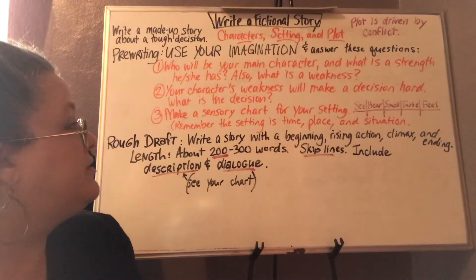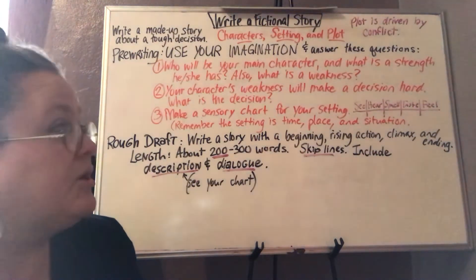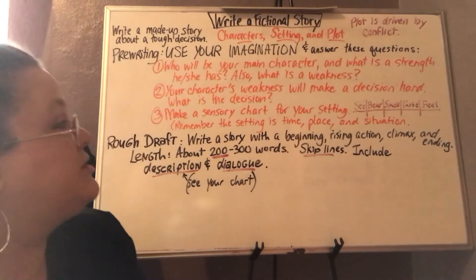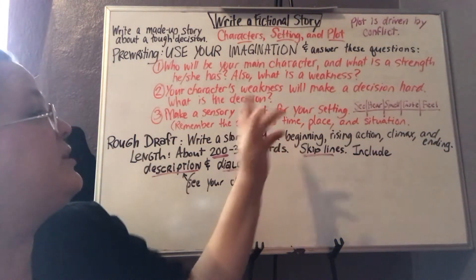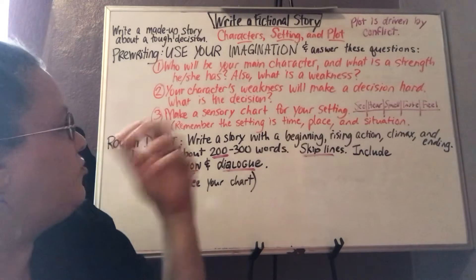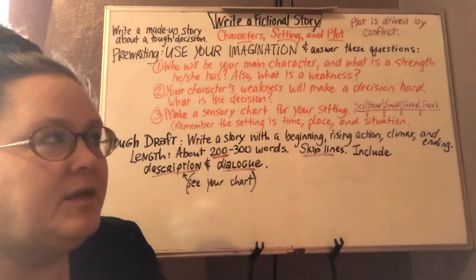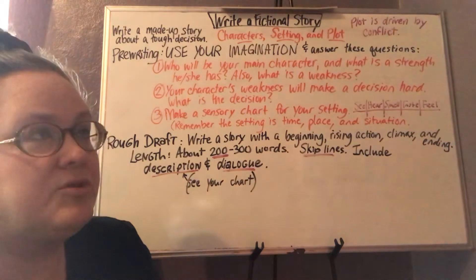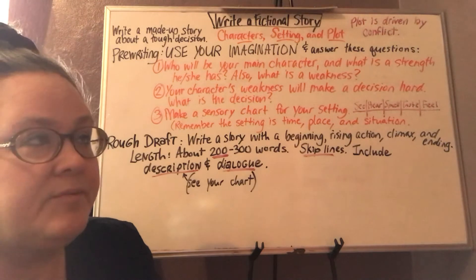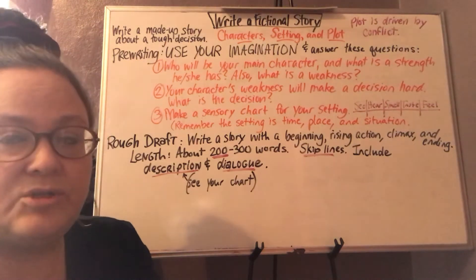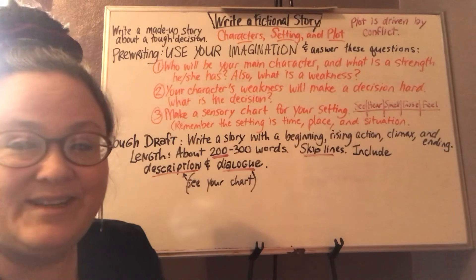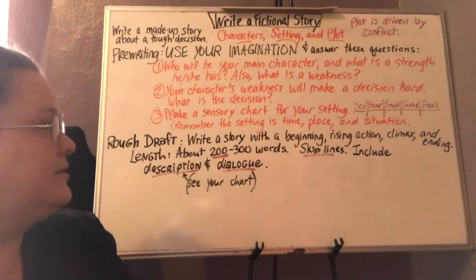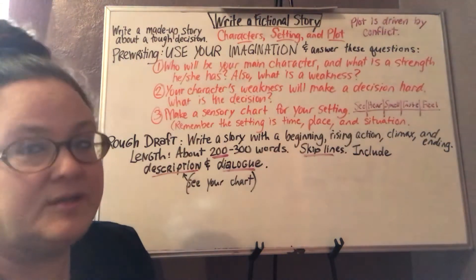Number two, your character's main weakness — we all have a lot of weaknesses, but this weakness is going to be something that will make a decision hard. So that's the weakness you want to put on number one. What is the decision your character is going to have to make? In the example I'm going to attach, this seventh-grade girl who is friendly but shy is going to have to make the decision to talk to a boy that she likes. So is she going to make that decision or not? Is she going to talk to him or not?